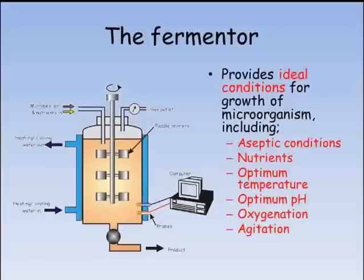Once the fermenter is running, nutrients need to be supplied. To make sure these are evenly distributed, the fermenter is agitated and stirred using large paddles. Oxygen is also added to the fermenter so the microorganisms can grow quickly. Temperature and pH can both affect the rate at which the microorganisms grow, so they need to be continually measured and adjusted to keep them at optimum levels.